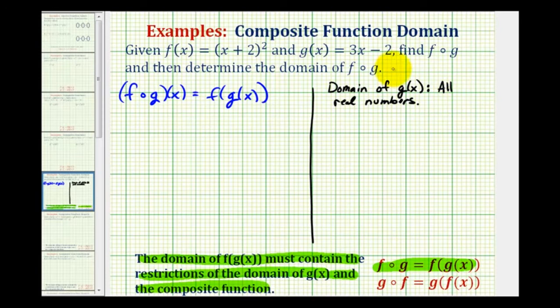Using interval notation, we could express this as the interval from negative infinity to positive infinity. So notice that there are no restrictions on the domain of g of x, which means we can go ahead and determine the composite function. And the domain of the composition will be the domain of f of g.